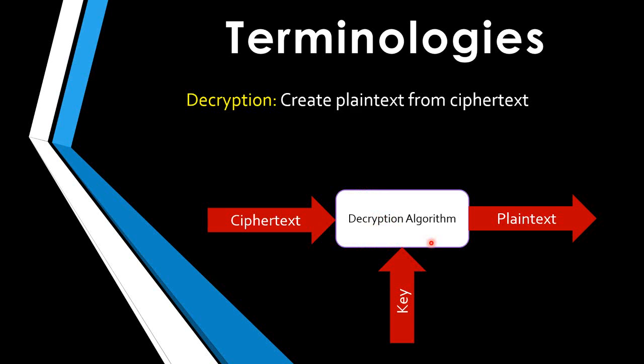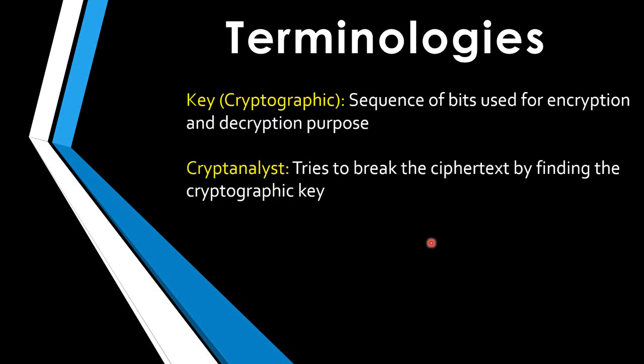Next is the key. A cryptographic key is nothing but a sequence of bits used by all encryption and decryption processes. To make sure that no one other than the sender and receiver can read the encrypted data, the ciphertext should not be decryptable by any third party — and that is enforced through the use of keys. There are different types of keys, which we'll cover in upcoming videos.